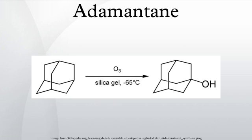Adamantane is a colorless, crystalline chemical compound with a camphor-like odor. With a formula C10H16, it is a cycloalkane and also the simplest diamondoid. Adamantane molecules consist of four connected cyclohexane rings arranged in the armchair configuration. It is unique in that it is both rigid and virtually stress-free.